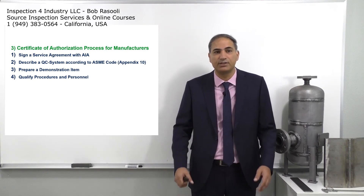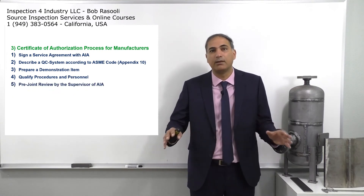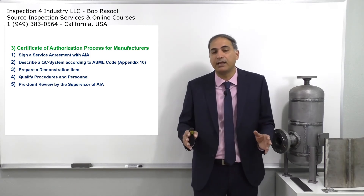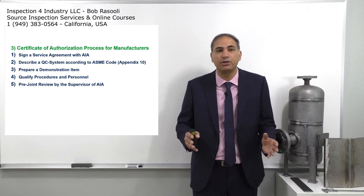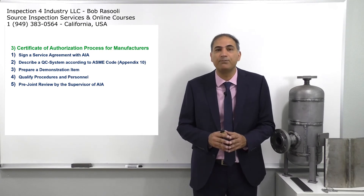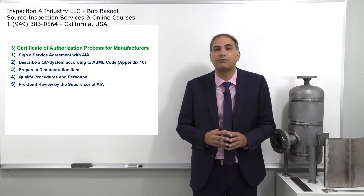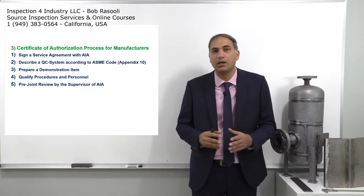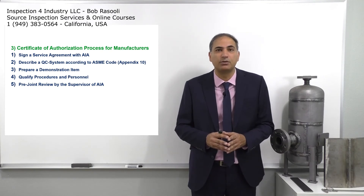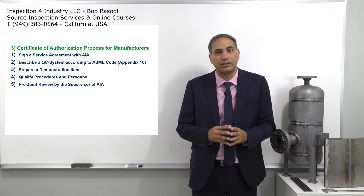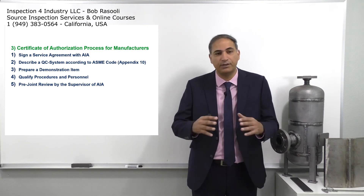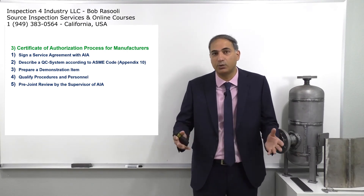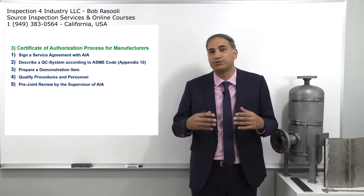Next, after implementing and describing the quality control system in their facility based on Appendix 10, there is a pre-joint review. A supervisor inspector from the Authorized Inspection Agency comes to make a primary evaluation or audit of the pressure vessel manufacturer to ensure everything is in order — no non-conformities — and that everything is described as indicated in Appendix 10. If there are issues, they are noted and the manufacturer has a chance to fix them.